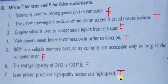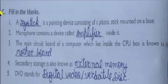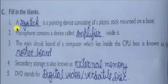Now Part C is fill in the blanks. I will read the question and the blank. Listen carefully for spellings — I am reading the spelling also. First answer is joystick — J-O-Y-S-T-I-C-K — joystick. Second fill in the blank answer is amplifier — A-M-P-L-I-F-I-E-R — don't make any mistake, it is amplifier.